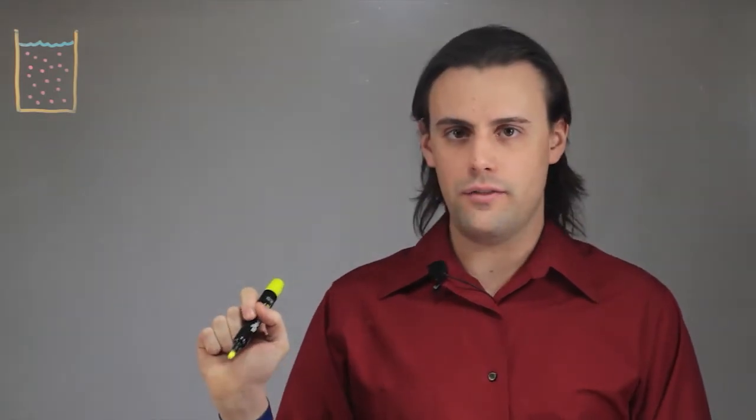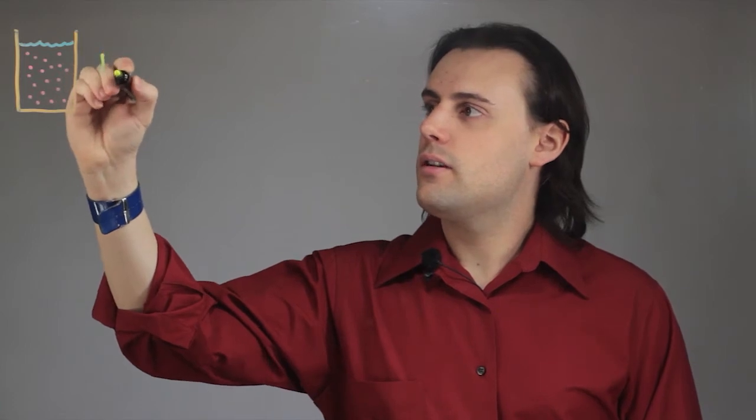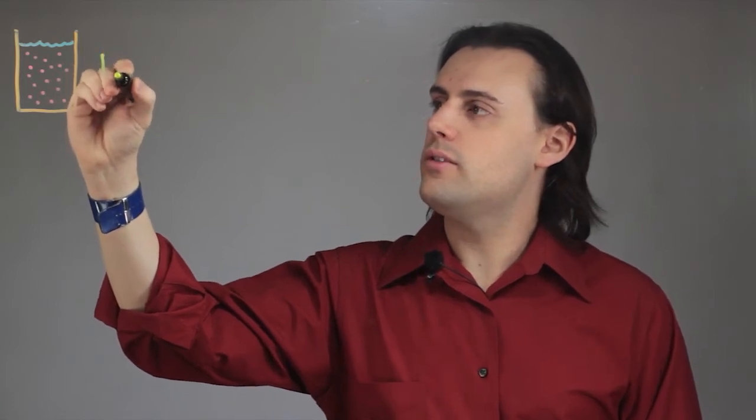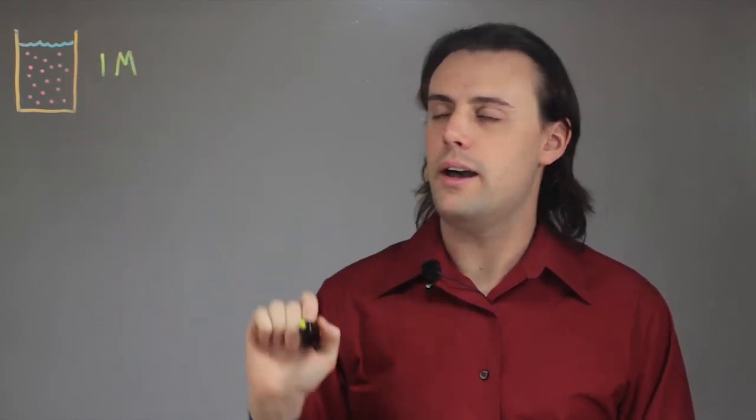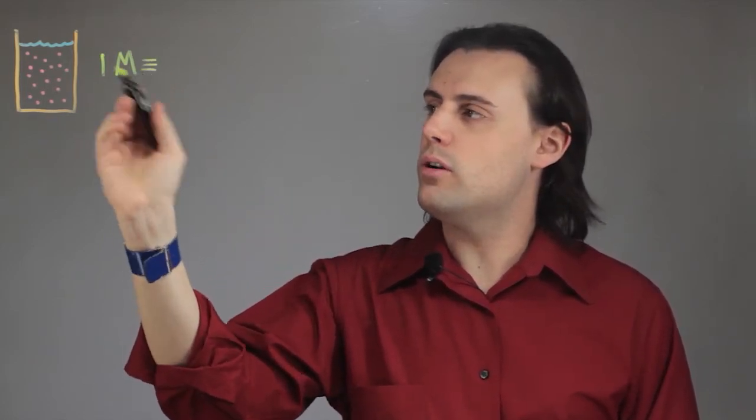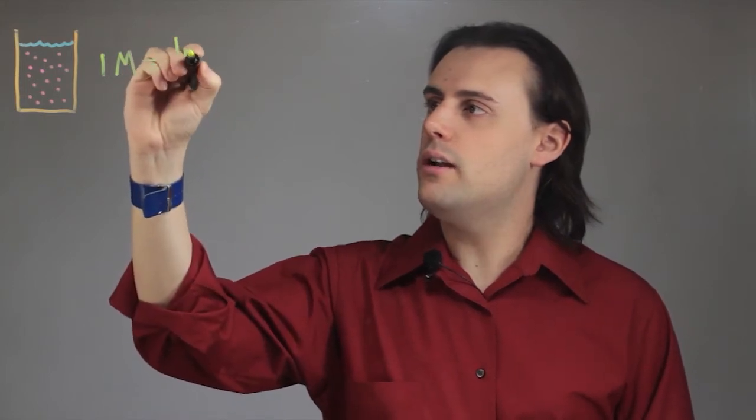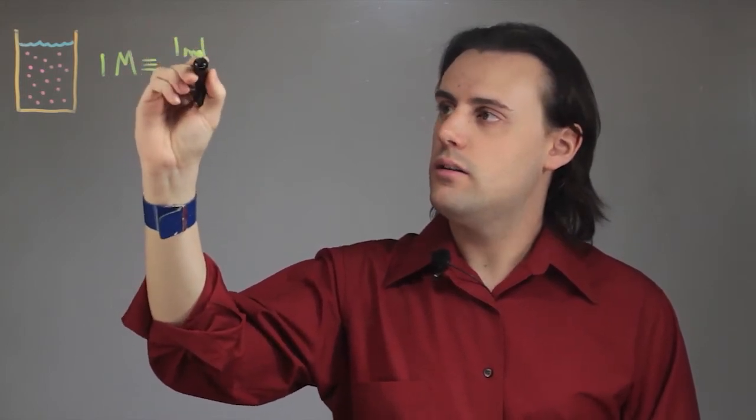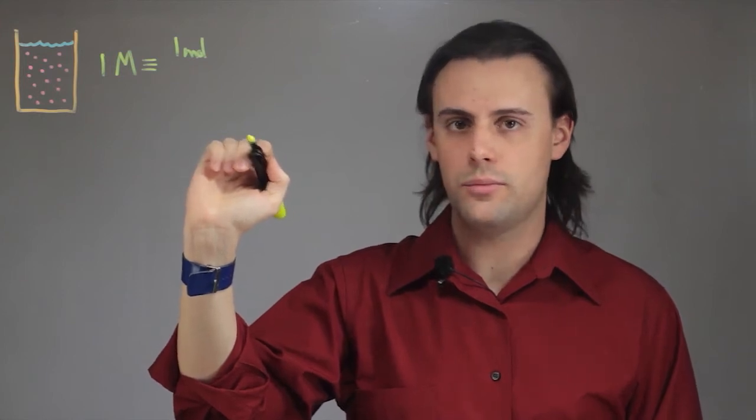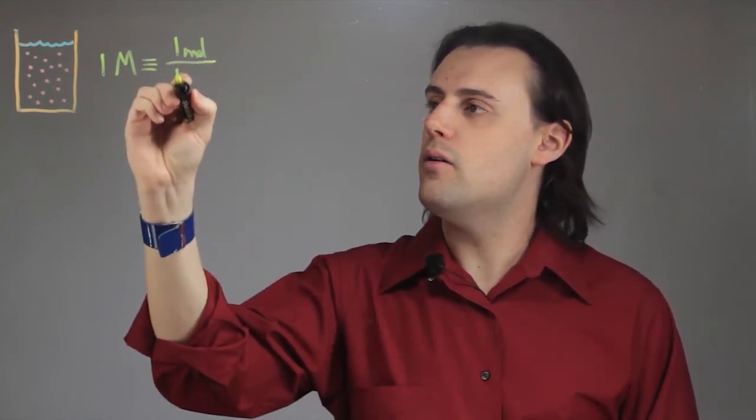So first let's consider the definition of molarity. The unit for one molar of substance is capital M. So molarity for one molar substance is defined as one mole of a particular chemical species divided by one liter.